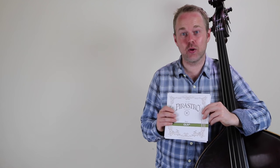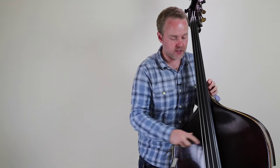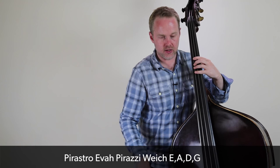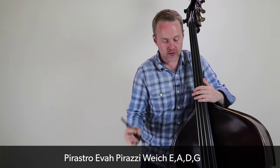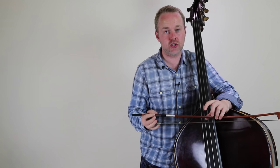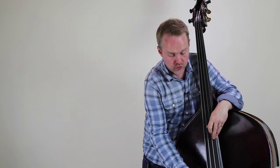Let's get into that right now, and you'll hear examples of arco and pizzicato. I'm going to start out with the full set of Eva Pirazzi Weich strings. Let's have a listen to how they sound under the bow. They're relatively easy to start. I think for a hybrid string, in my opinion, they're the best available because they've got a great pizzicato sound, and they do start the string easily.